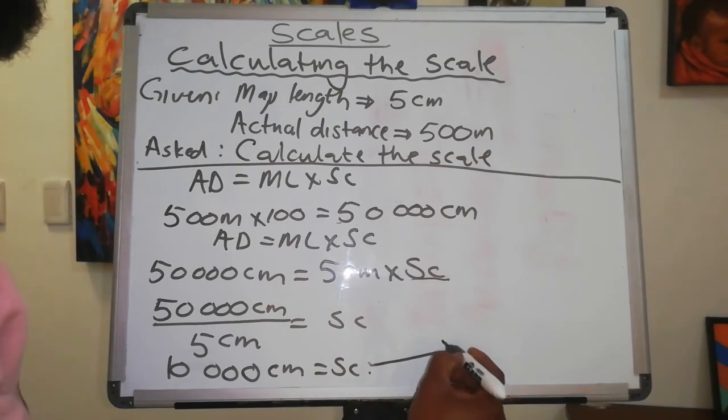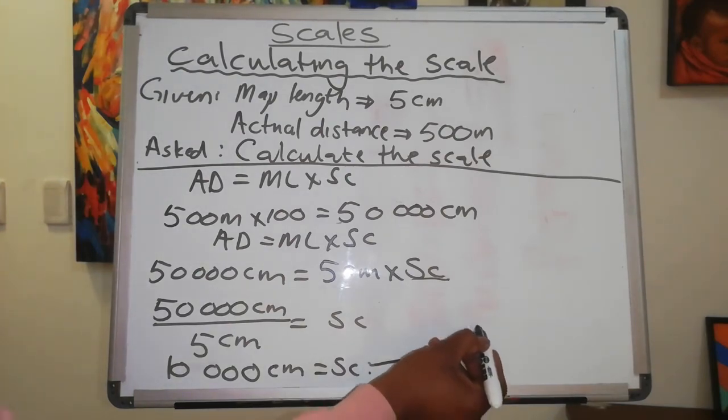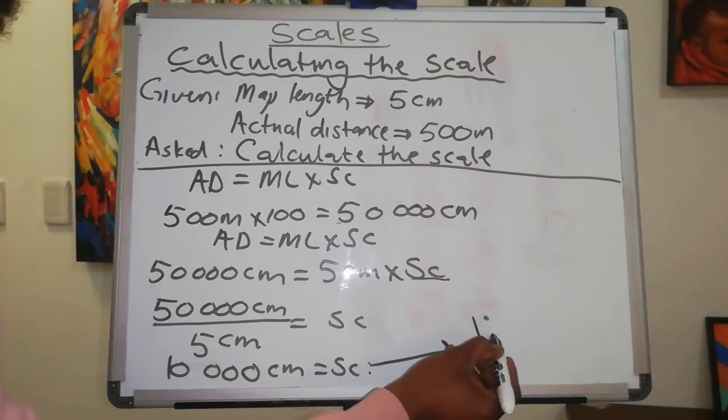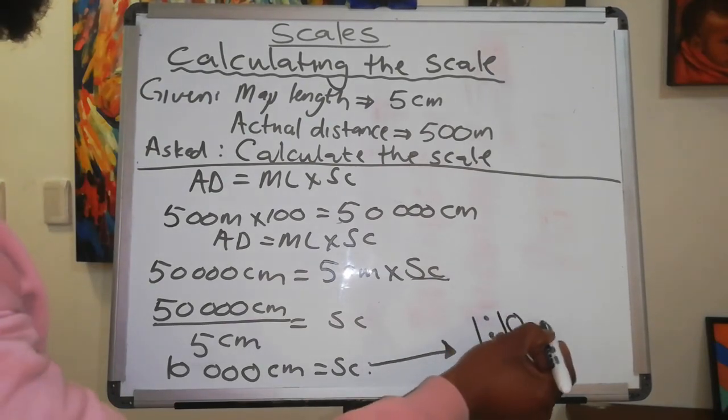So your final answer is going to be written in a ratio scale. Therefore, we say it is 1 to 10,000.